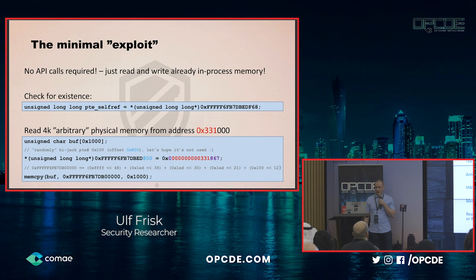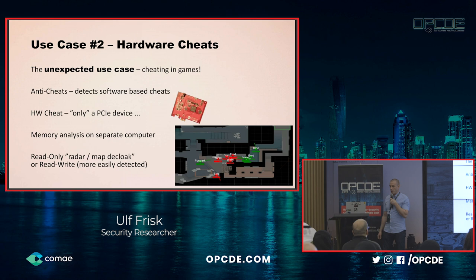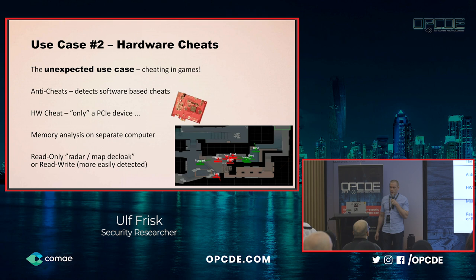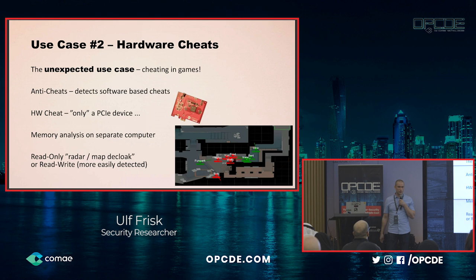Another use case I didn't expect at all was cheating in games. It turns out anti-cheating software is really powerful — it detects most, if not all, software-based cheats. A hardware-based cheat should, in theory, only be seen as a PCI Express device on the gaming system, and you need PCI Express devices in your gaming systems anyway. You could use this hardware device and ship memory to a remote computer to do the analysis there, and the anti-cheat software cannot reach into that computer.